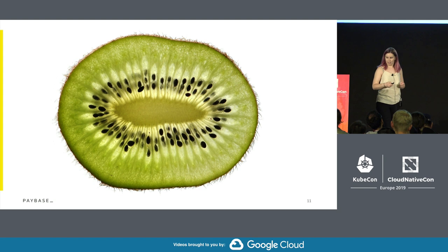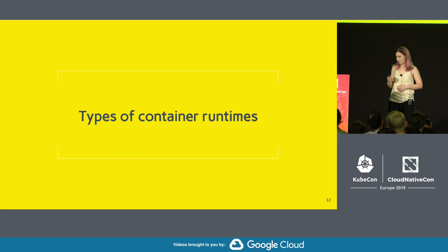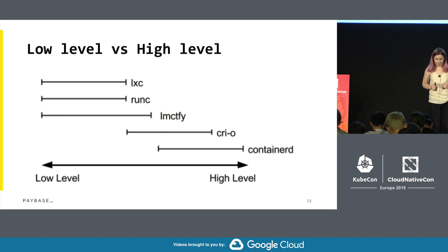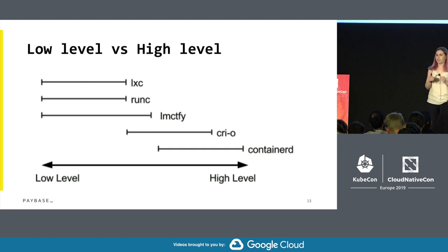So let's look at the different types of container runtimes. We have low-level runtimes and we have high-level runtimes. And then we have Docker, which does low-level, high-level, and additional functionality. When we say low-level runtimes, we mean lxc, runc, and lmctfy. All you need to know about them in this context is that they are the runtimes that take care of creating those namespaces and process isolation from a kernel point of view.